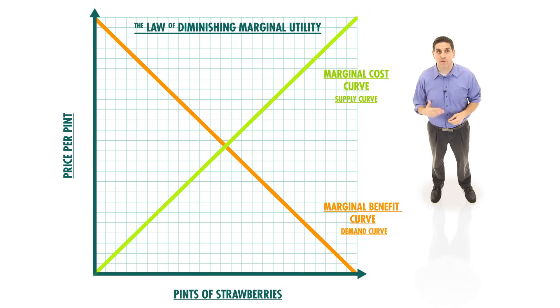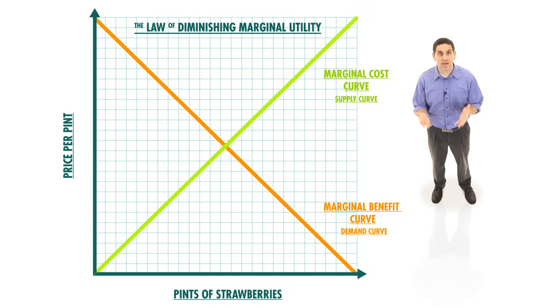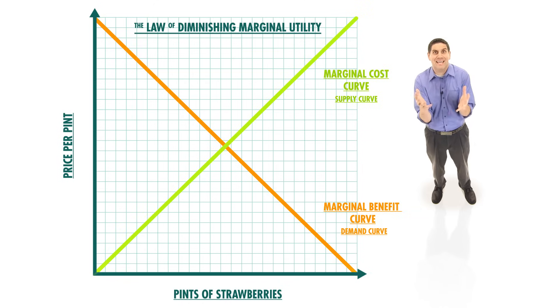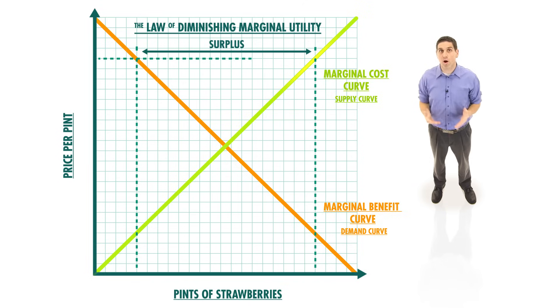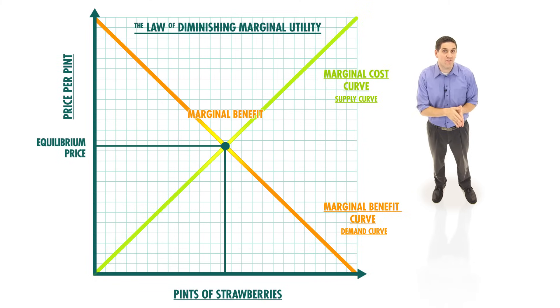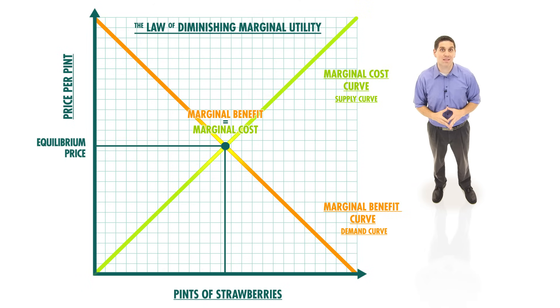It represents the additional amount of resources, time, and energy that each additional pint of strawberries costs. This graph explains why markets tend to be so efficient with our scarce resources. If strawberry producers produce too few strawberries, the marginal benefit of the last unit will be greater than the marginal cost—that's the market calling out for more strawberries. If they produce too much, the marginal cost would be greater than the marginal benefit, and they'd be wasting resources. Equilibrium is efficient because the marginal benefit of the last unit consumed equals the marginal cost. This is reminiscent of an example Adam Smith used.